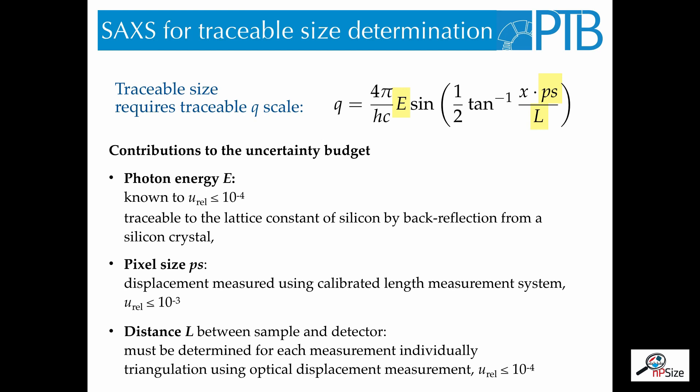The photon energy is known to a relative uncertainty of 10 to the minus 4. This has been measured by Bragg reflection of the synchrotron beam in a silicon single crystal, and therefore the photon energy is traceable to the lattice constant of silicon. The pixel size of the detector has also been previously measured by displacing the detector and measuring the shift of the scattering pattern on the detector. By this method, we get the pixel size of the detector with a relative uncertainty of 10 to the minus 3.